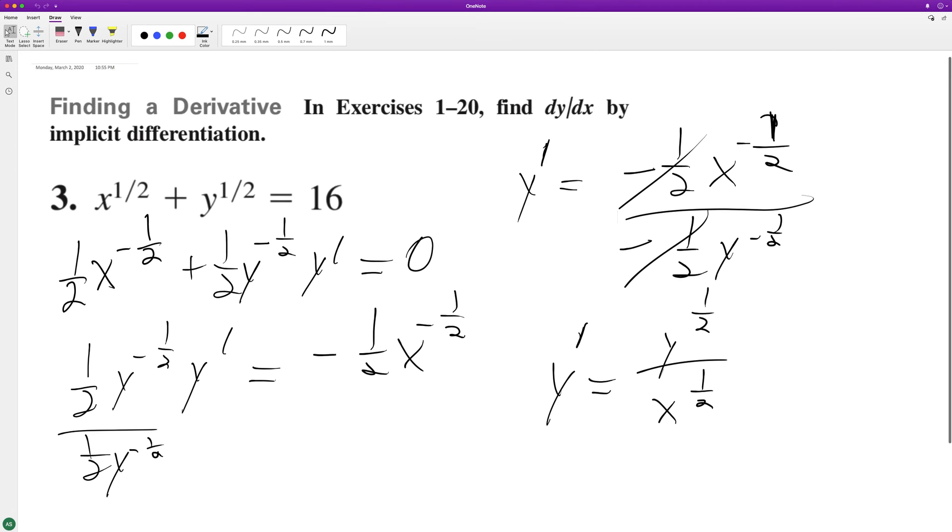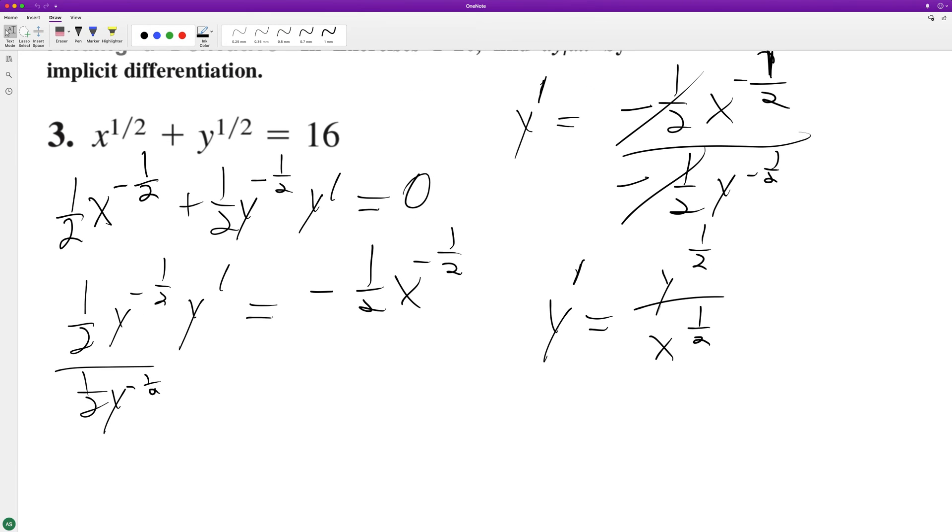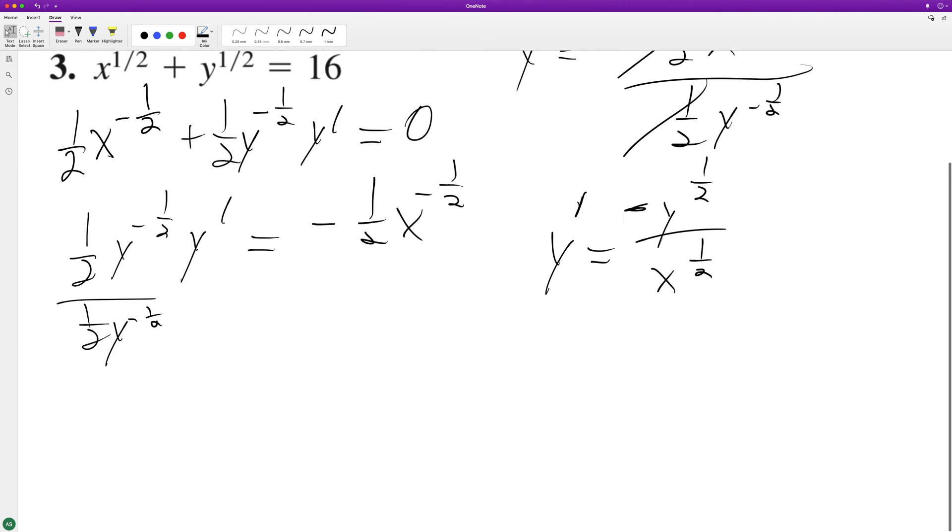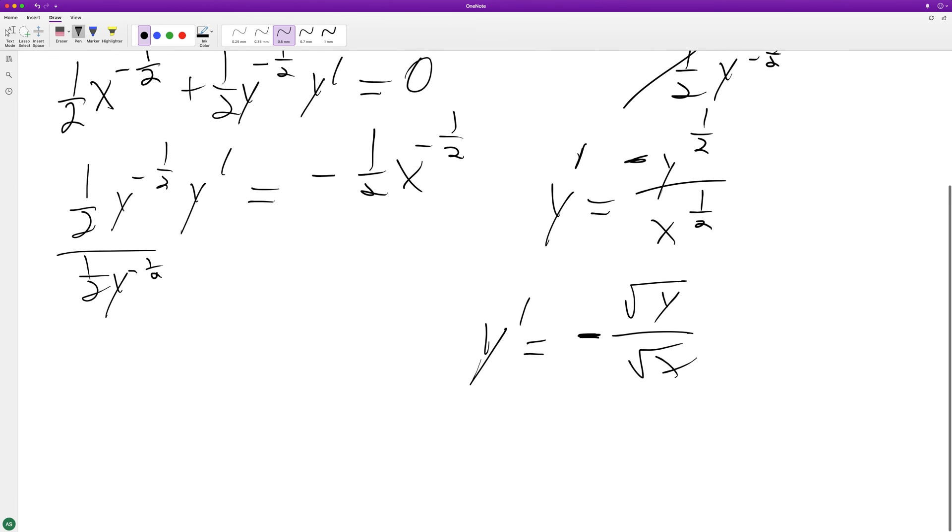Which is the same thing as—oh excuse me, it's still negative—but this simplifies down with radicals. Y prime is equal to negative square root of y over square root of x, which you can rewrite as negative square root of y over x. That's it.